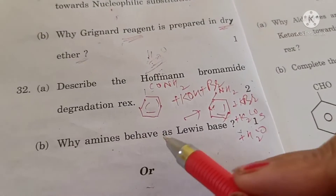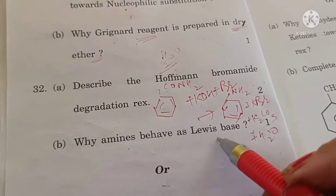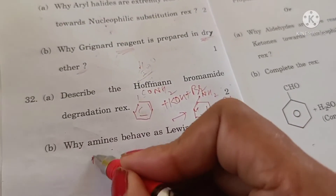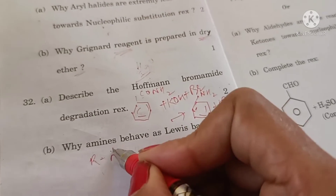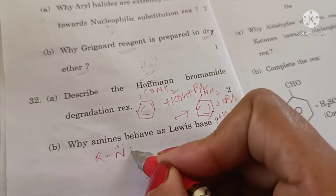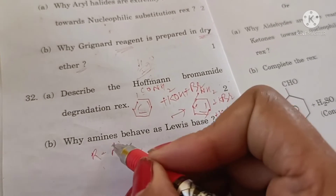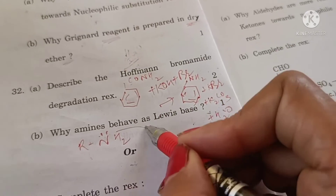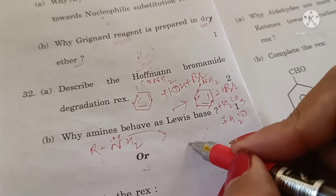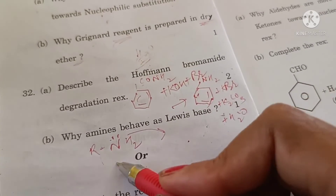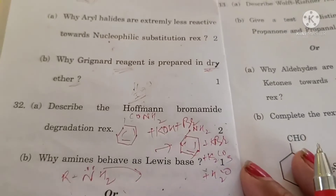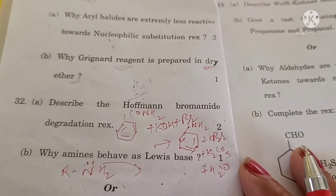Why do amines act as Lewis bases? Because in amines there is availability of a lone pair of electrons which can be easily donated to other substances. Therefore amines act as Lewis bases — an electron pair donor is a Lewis base.